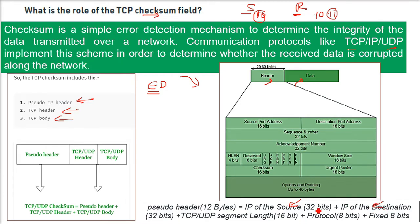The pseudo header will only contain those values which don't change, like the IP of the source, IP of the destination, TCP/UDP segment length, protocol, and the fixed 8 bits. The pseudo header is just created for the time; it has no value, it is just for checksum.